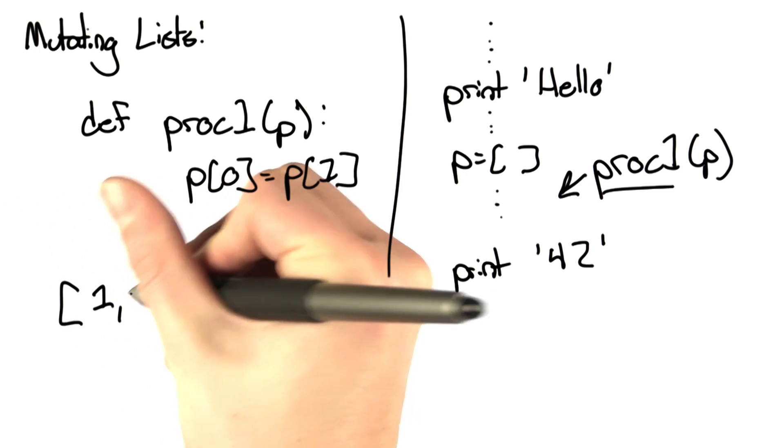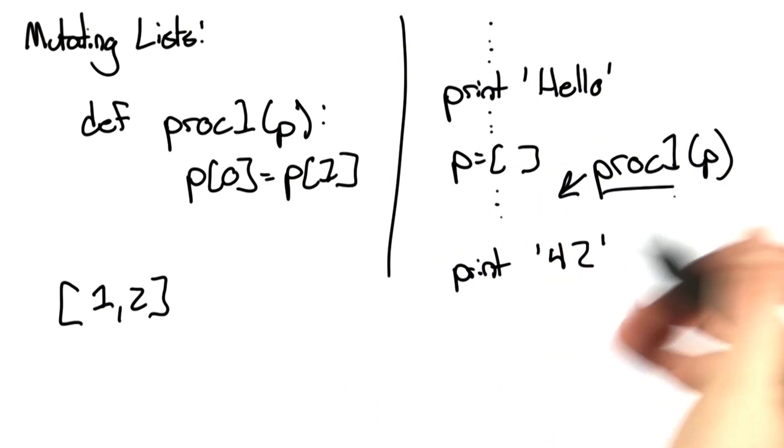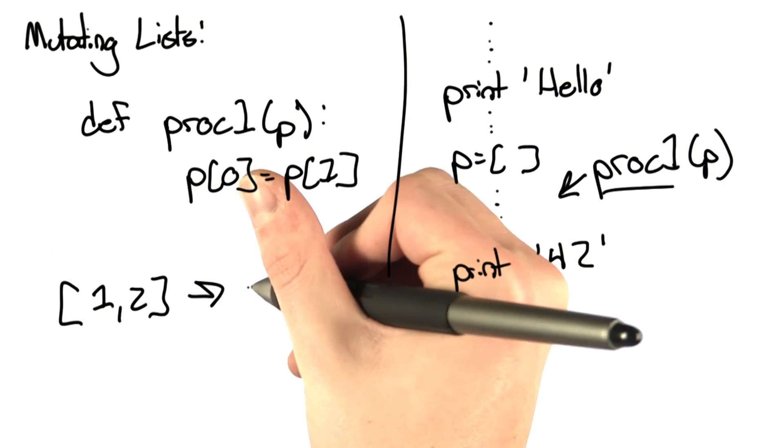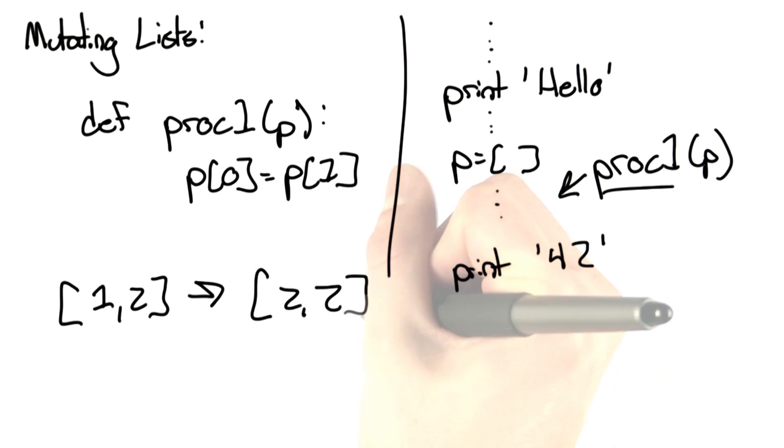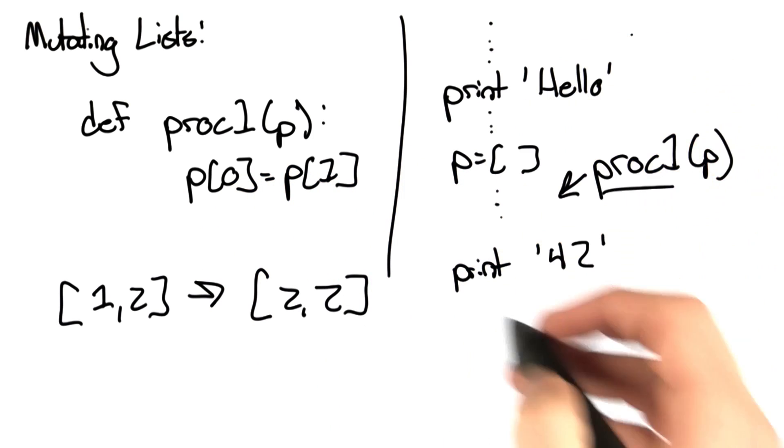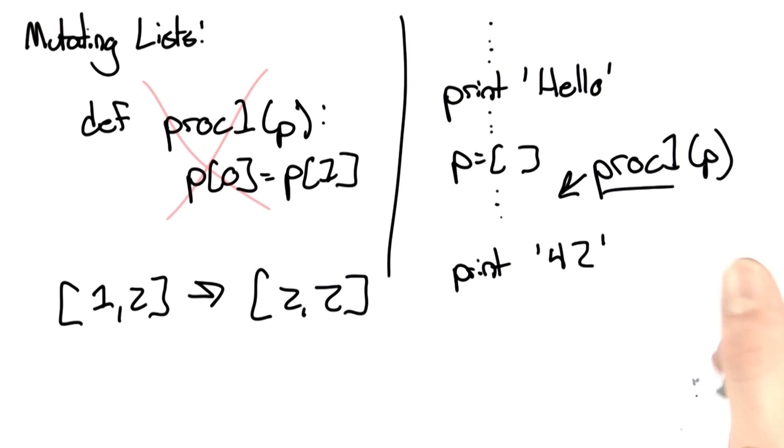If we had in a list that was 1, 2, executing proc 1 would then change it to 2, 2. So obviously that can very well affect how this code executes, so this isn't right.